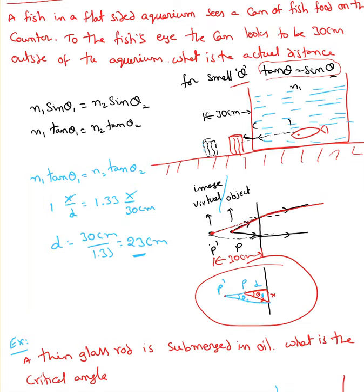Correction: n1 is air, so n2 is water. N1 is 1, tan theta1 is x over d, and n2 for water is 1.33. He didn't give you that n value in this problem, but in exams I'll definitely provide n values — you don't need to remember those.